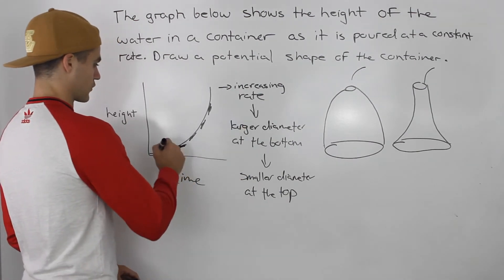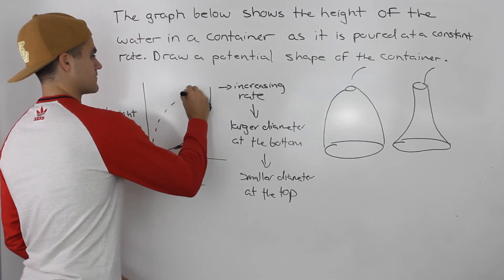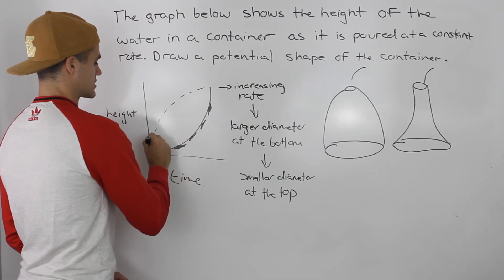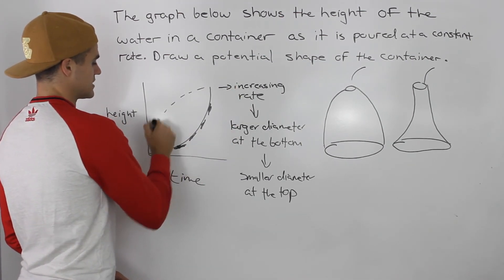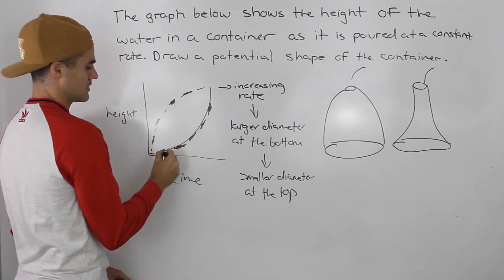Now what if the graph instead of this shape was maybe perhaps shaped like this, as this dotted line. Well then it would be a decreasing rate, because notice how the tangents are steep at the beginning, but then they get less steep. So it's the opposite of this shape.